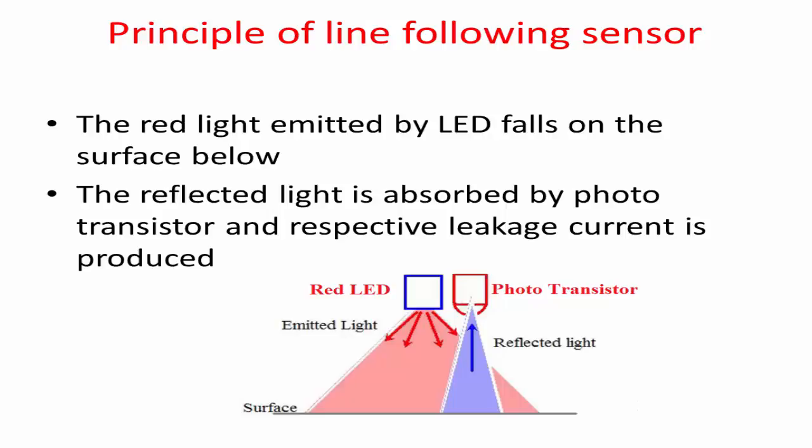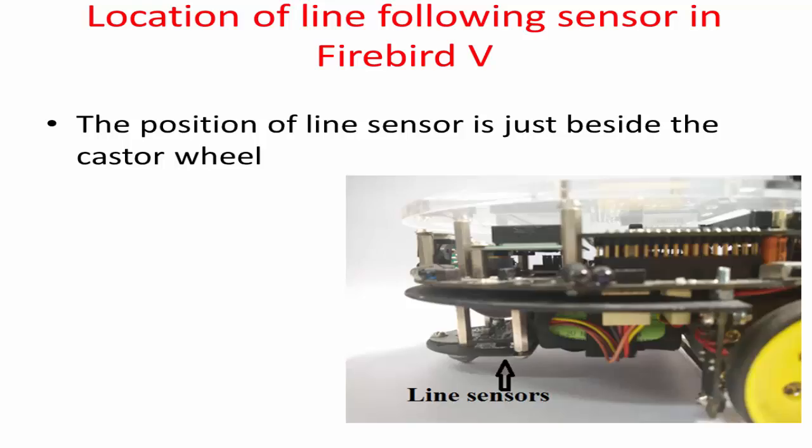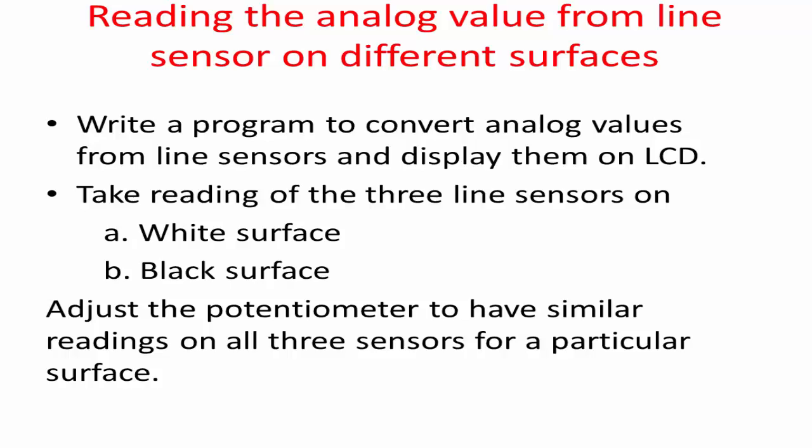Hence, there is a high analog voltage on white surface and low analog voltage on black surface. The analog voltage from the line sensor varies from 0 to 5 volts. The position of the sensor is just beside the caster wheel, as shown in the figure. To read the analog value from the line sensor on different surfaces, write a program to convert analog values from the line sensor and display them on the LCD. Take readings from the three line sensors on both white and black surfaces.